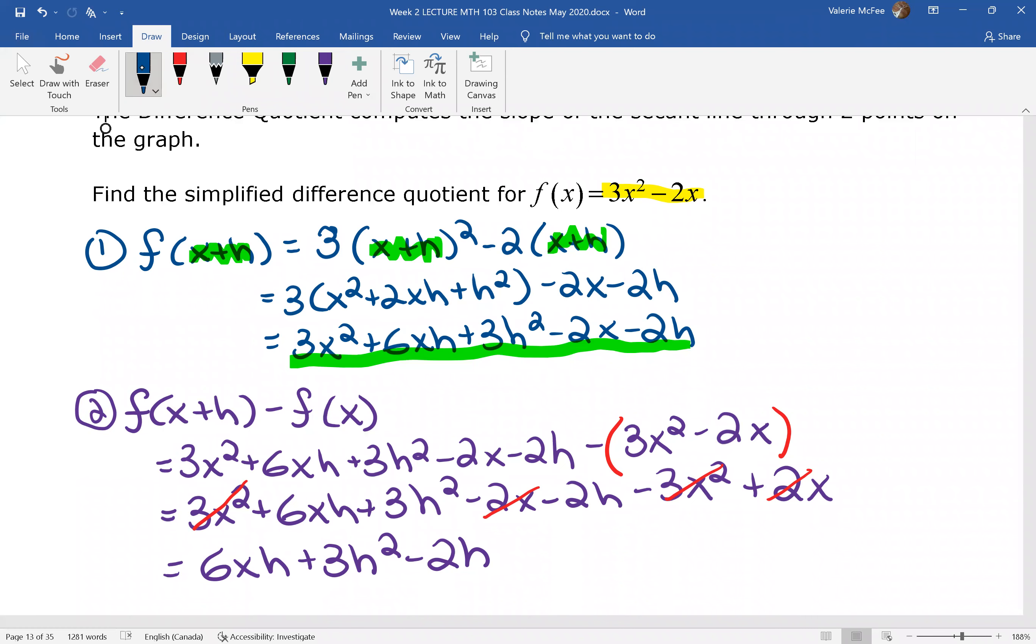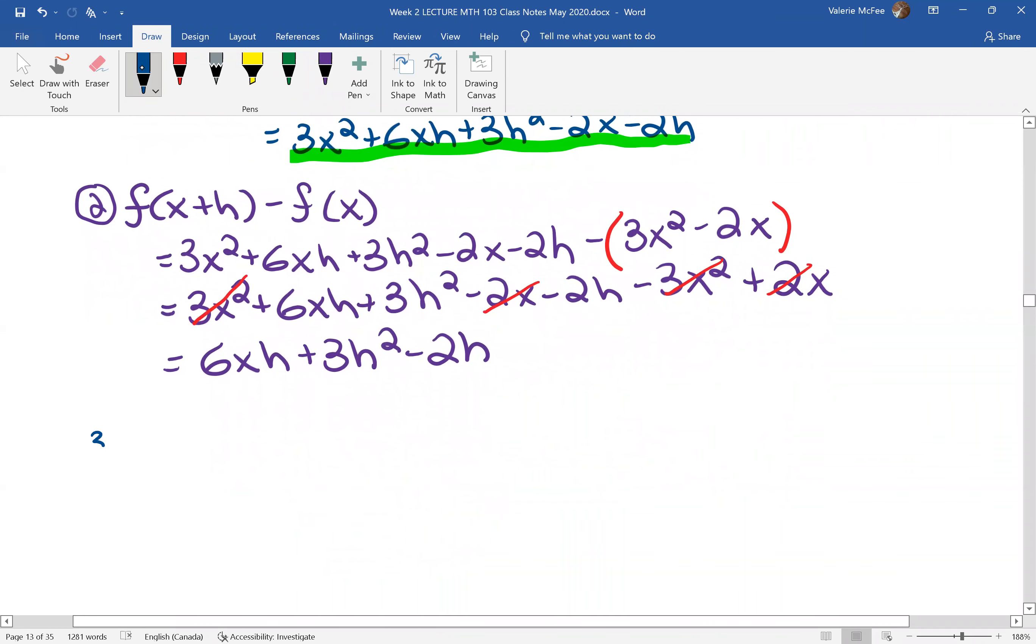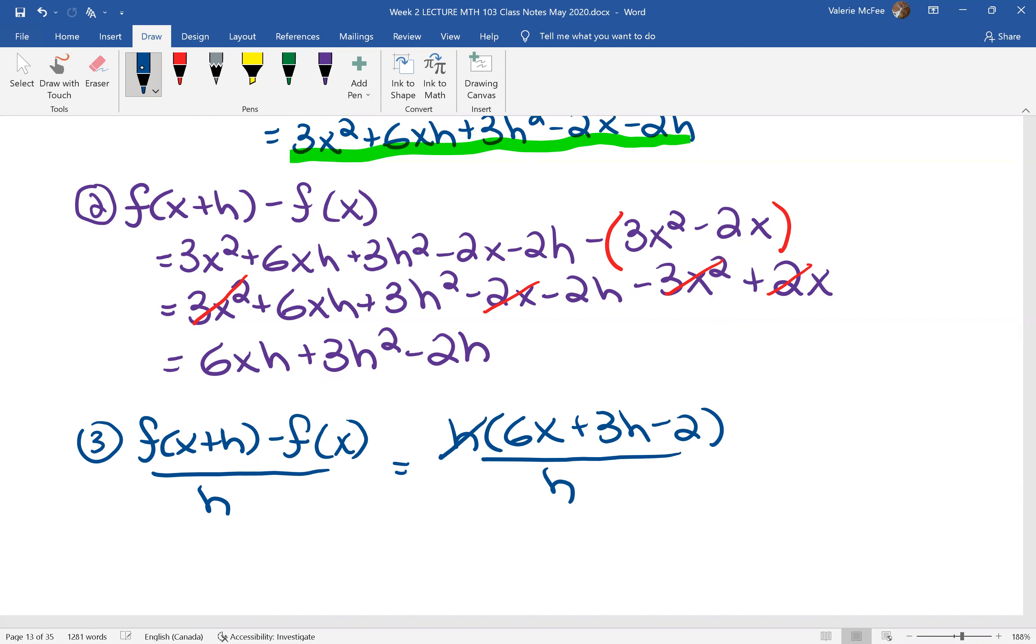This is going to be important now in our third step, which is the whole difference quotient. The f(x+h) minus f(x), we just found that, all over h. Now we said that h is common, so we can divide that out. And this divides out h, which is always the goal of the difference quotient. We don't want h in the denominator when we are finished. There it is. The simplified difference quotient. Let's try one more.